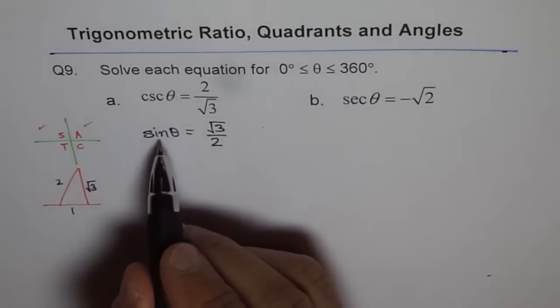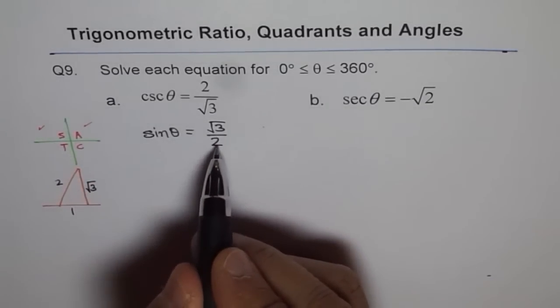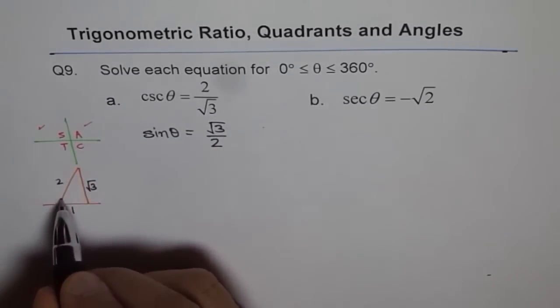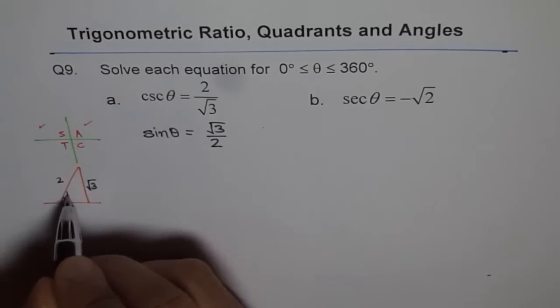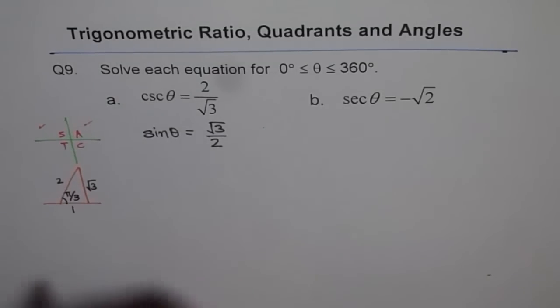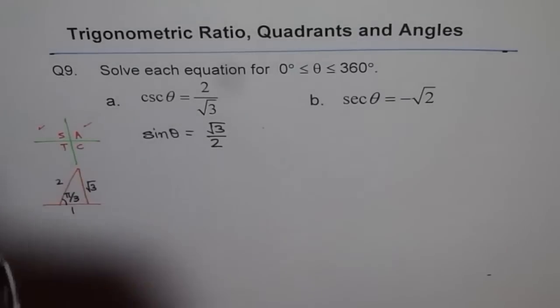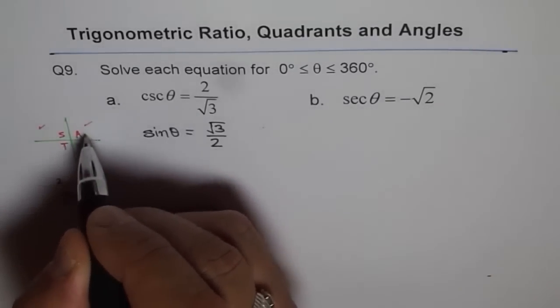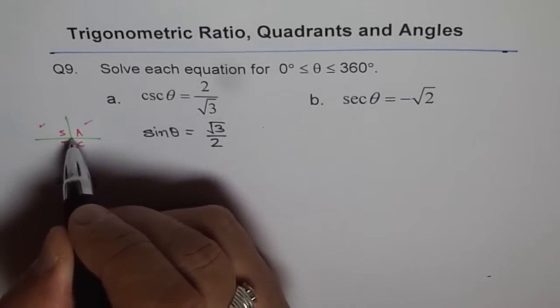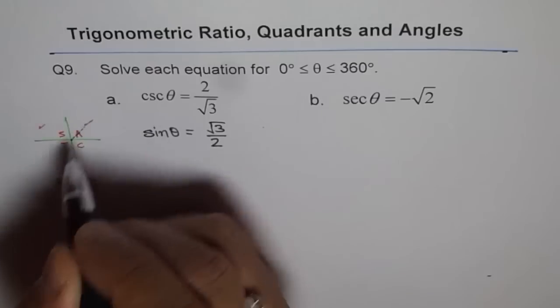As you know, sine is opposite over hypotenuse. So that is opposite to this angle and that angle is pi by 3 for us. And therefore, the acute angle in this quadrant is pi by 3. So here, we have one solution, pi by 3.